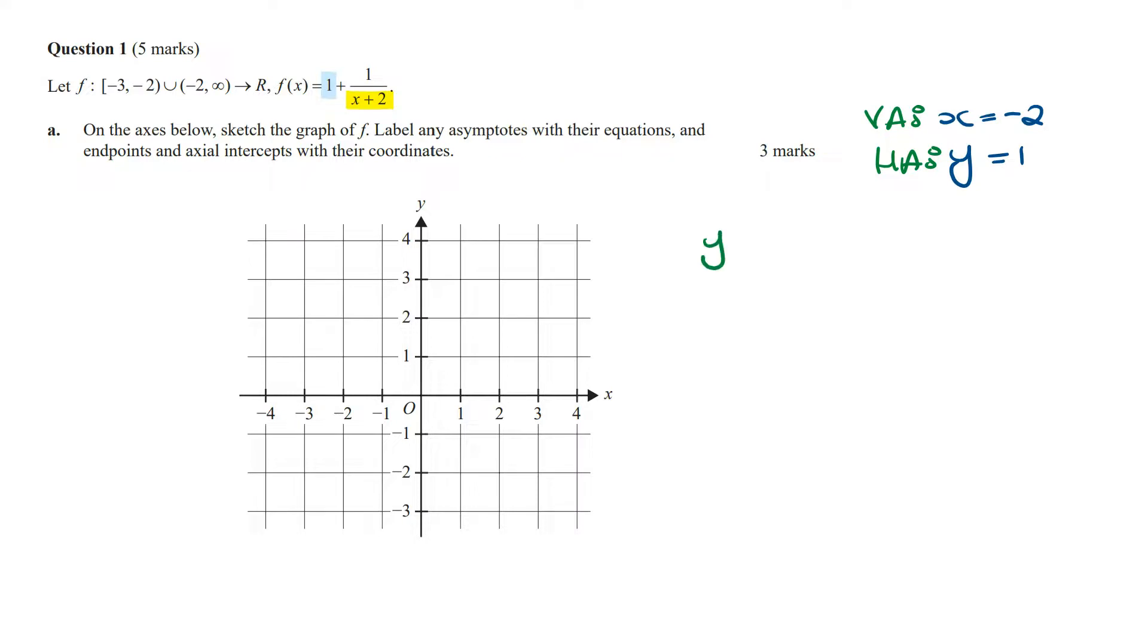To find the y-intercept, we let x = 0 and then solve for y. Doing this, we're going to get y = 1 + 1/(0 + 2), which is 2, so this is going to be 1 and a half, which is the same as 3/2.